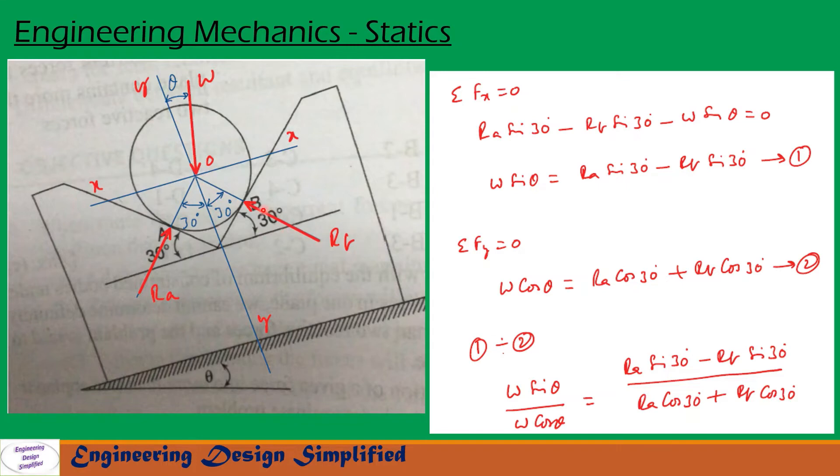Reaction at B, Rb, will be perpendicular to this face. That is drawn here, Rb. If this angle is theta 30 degrees, then this angle will be 30 degrees. Similarly, reaction at A, Ra, is perpendicular to this plane here and that is drawn like this. If this angle is 30 degrees, then this angle will also be 30 degrees.